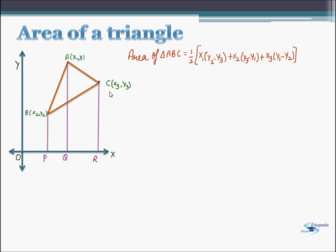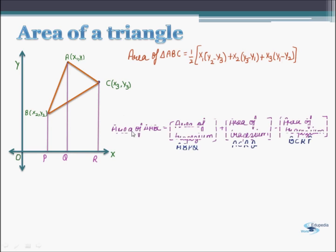a trapezium ACRQ and another trapezium BCRP. By combinations of different areas, we can calculate the area of this triangle. The area of this triangle can be calculated by first adding up the areas of two trapeziums and then subtracting from them the area of the third trapezium.